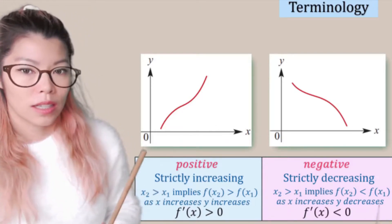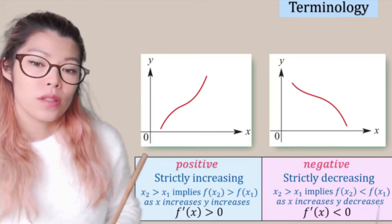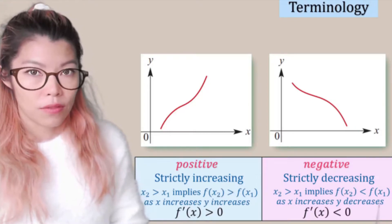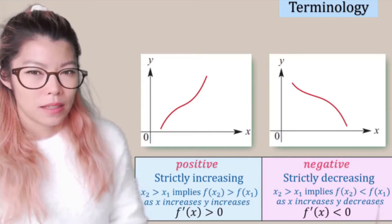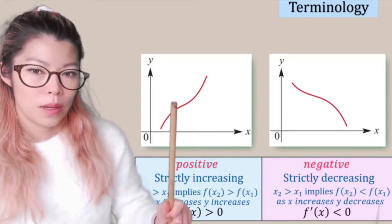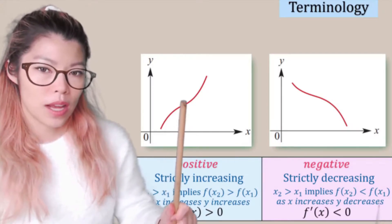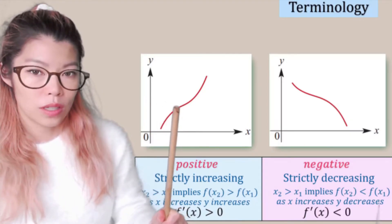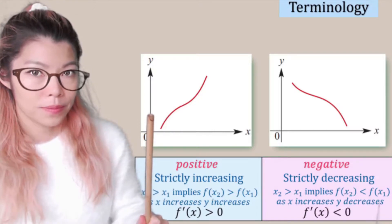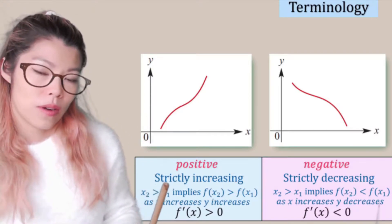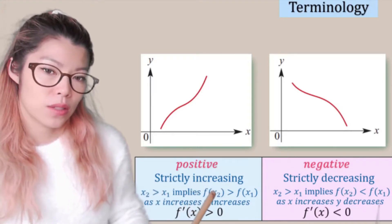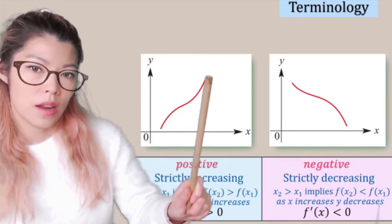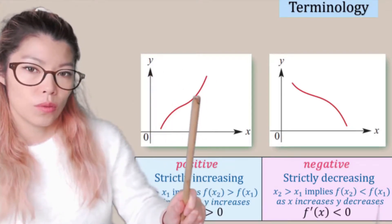How do we show something is strictly increasing? It happens when x2 is greater than x1 implies f of x2 is greater than f of x1. What does that mean? It means that if I pick a point here to be x1, and I move across a bit to x2, where x2 is greater than x1, then my y2 is also greater than my y1.